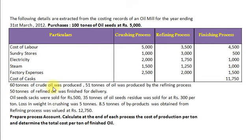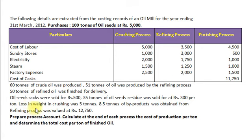60 tons of crude oil was produced. 51 tons of oil was produced by the refining process, and 50 tons of refined oil was finished for delivery. Oil seed sacks were sold for Rs. 500. 35 tons of oil seeds residue was sold at Rs. 300 per ton. Loss in weight in crushing process: 5 tons. 8.5 tons of by-products obtained from refining process, valued at Rs. 12,750.